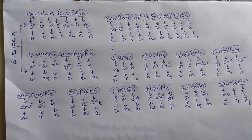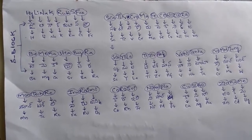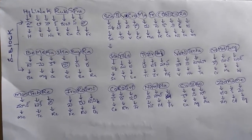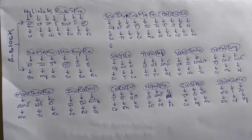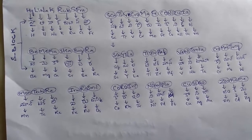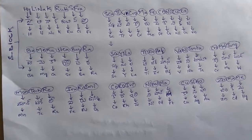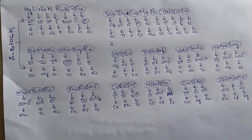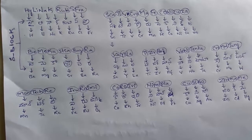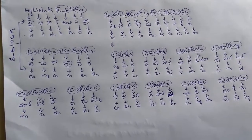How to pronounce this? First s-block elements, first group: hyalina krubis fra. Once again, hyalina krubis fra. Hi means hydrogen, Li means lithium, Na means sodium, K means potassium, Ru means rubidium, Cs means cesium, and Fra means francium. Hyalina krubis fra - so hydrogen, lithium, sodium, potassium, rubidium, cesium, francium.